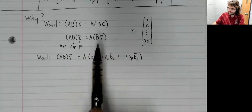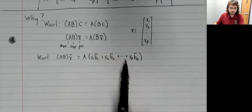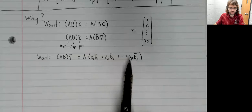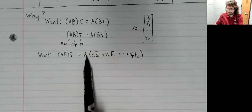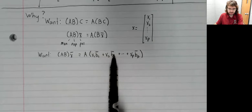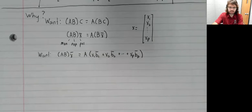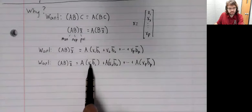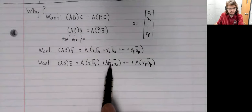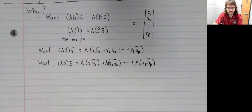If we think of B as a bunch of column vectors sitting next to each other, then B times X is a linear combination of the columns of B. Now this matrix vector multiplication distributes over vector addition. In each of these terms, your X is a scalar, you can pull it out.